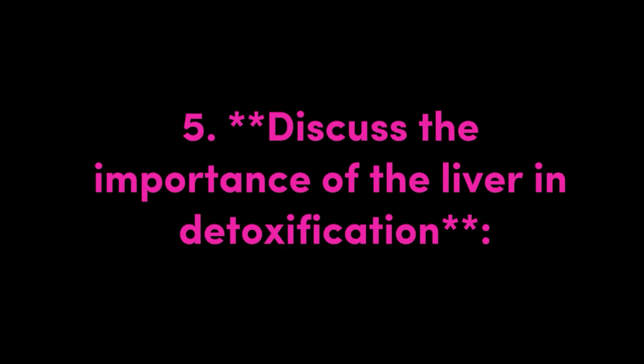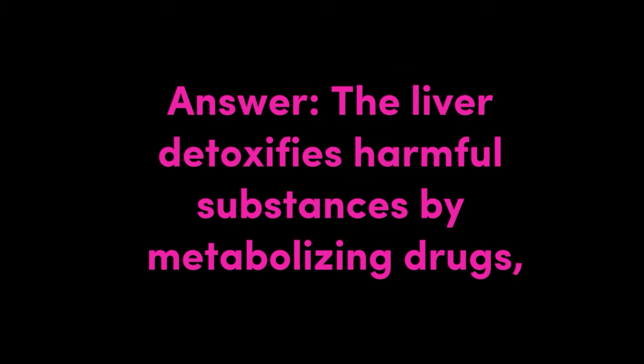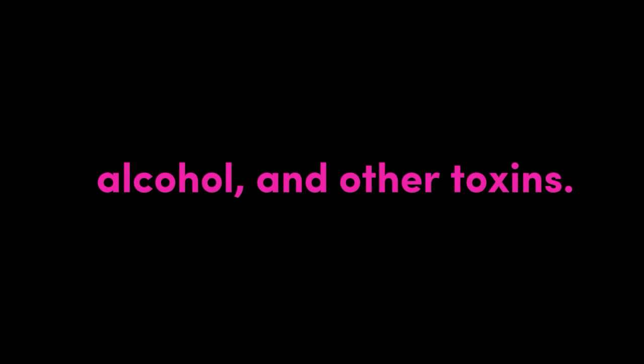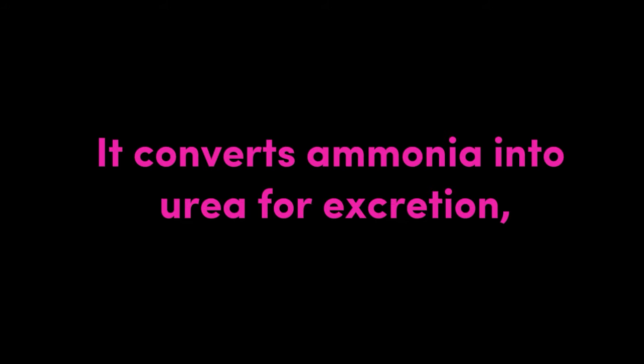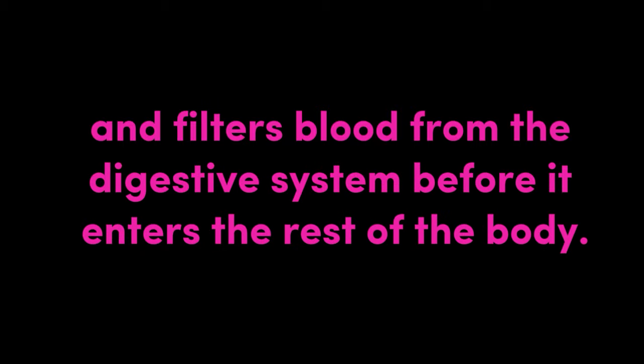Question 5: Discuss the importance of the liver in detoxification. Answer: The liver detoxifies harmful substances by metabolizing drugs, alcohol, and other toxins. It converts ammonia into urea for excretion, processes and removes old or damaged blood cells, and filters blood from the digestive system before it enters the rest of the body.